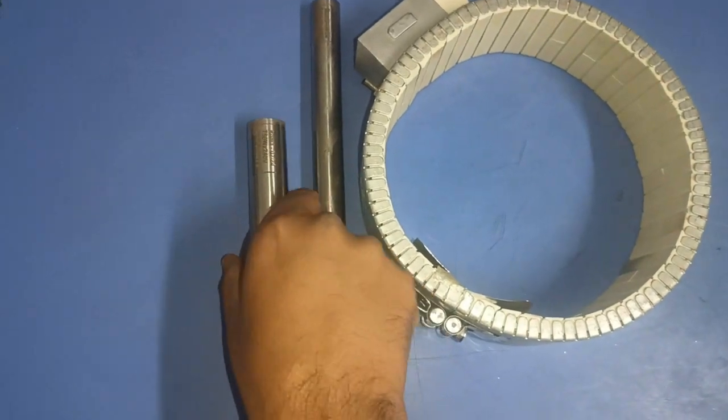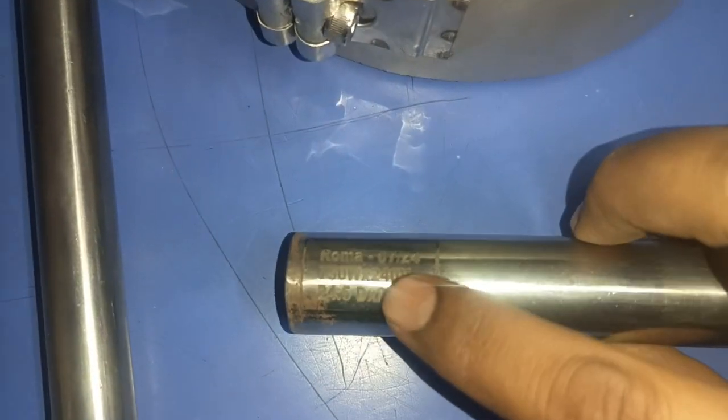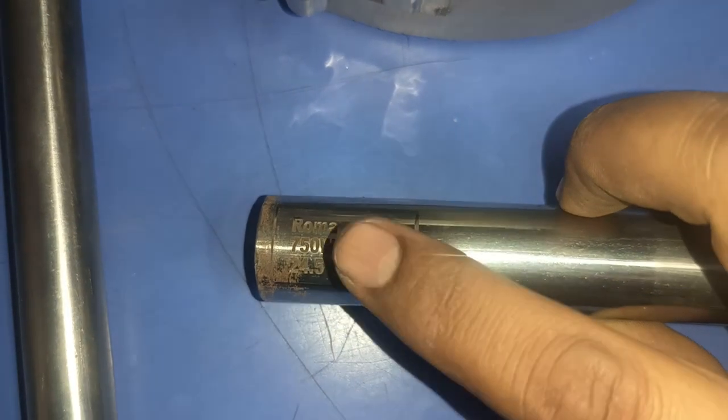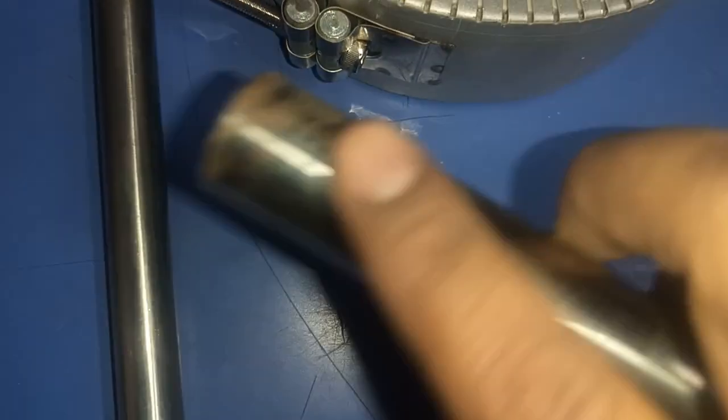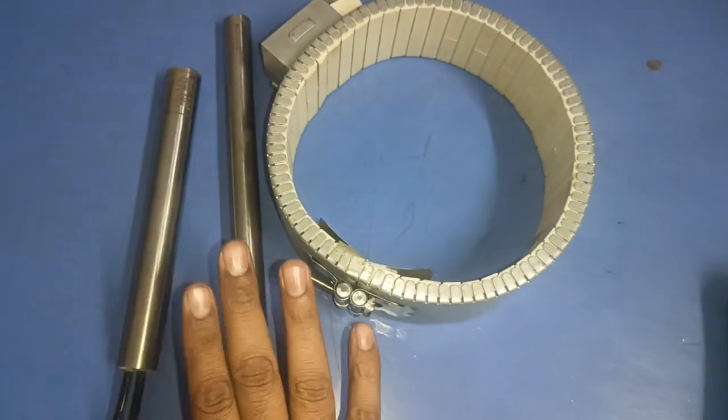For calculation of watt, some basic parameters were required. For example, you can see we have one 750 watt heater and operating voltage is 240 volt.